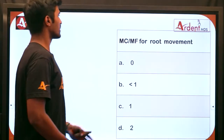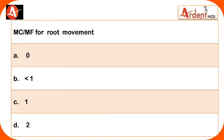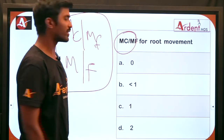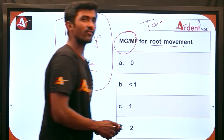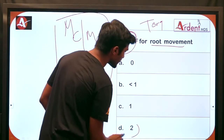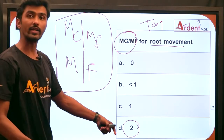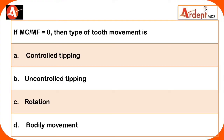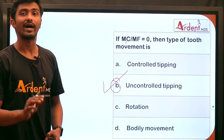For review: the moment to force ratio can also be written as Mc/Mf or M/F — all are the same. For root movement, which is torquing, the counter moment must be greater than the moment of force, so the ratio is always greater than 1. When the moment to force ratio is 0, no counter moment is given, resulting in uncontrolled tipping.